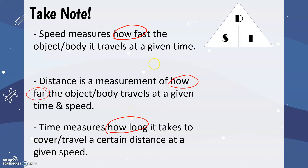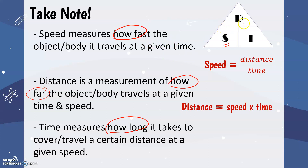To solve for distance, speed, and time, we can use this triangular figure to remember the formulas. D is written on top while S and T are both written below. When looking for speed, you divide distance over time. If distance is missing, you multiply speed and time. And lastly, if time is missing, you divide distance over speed.